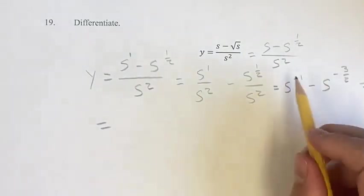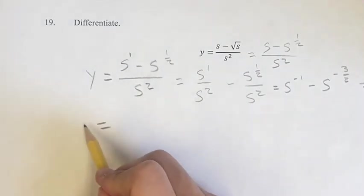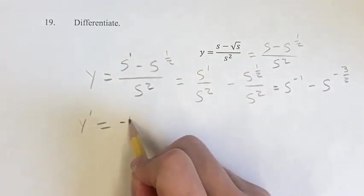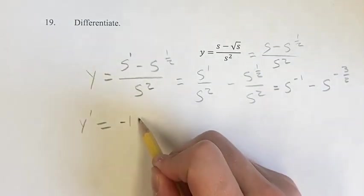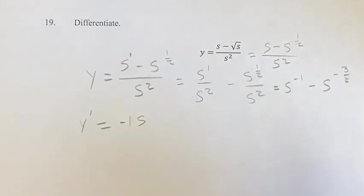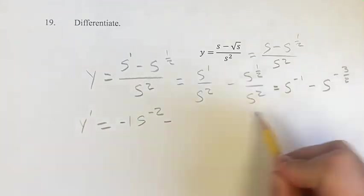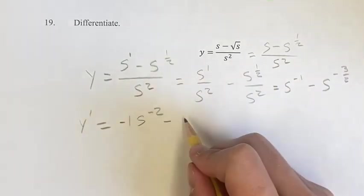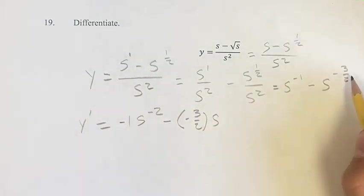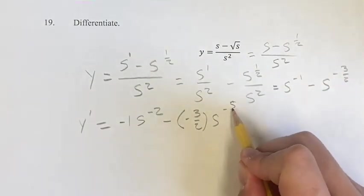So these are both power functions, so when you're taking the derivative, the way you go about that, you take the exponent, you bring it down to the coefficient, times s to your new exponent, which is the old one, which is negative 1, minus 1, so s to the negative 2, minus. Same thing, bring down your exponent, and then subtract 1 for your new exponent.